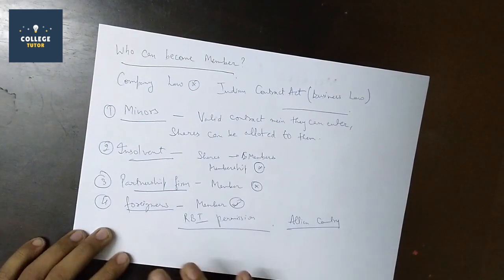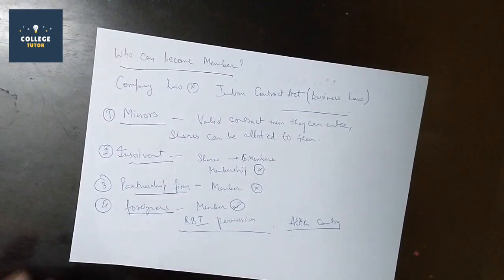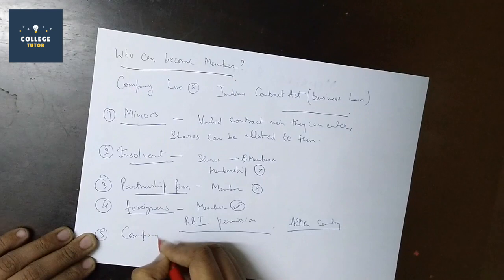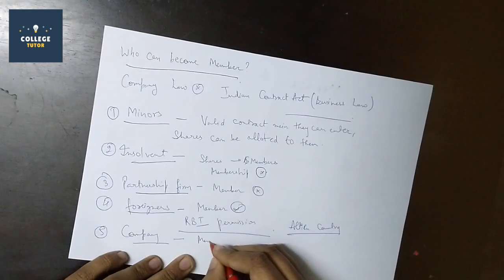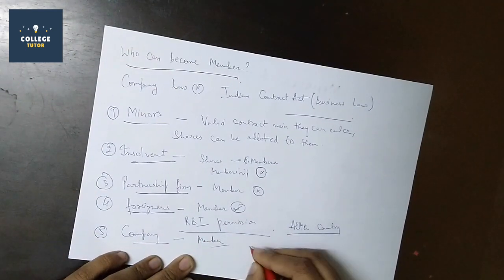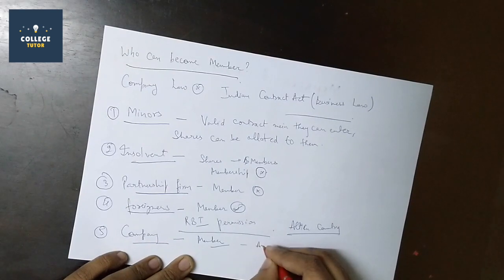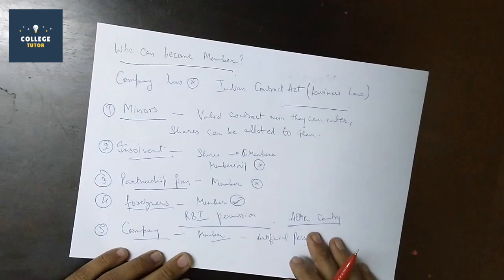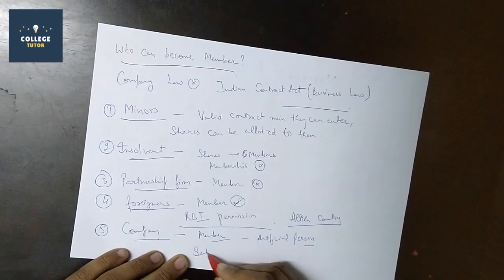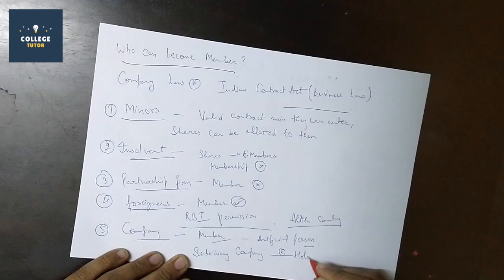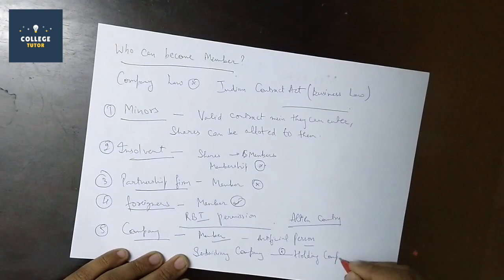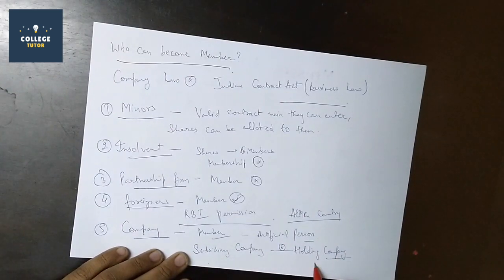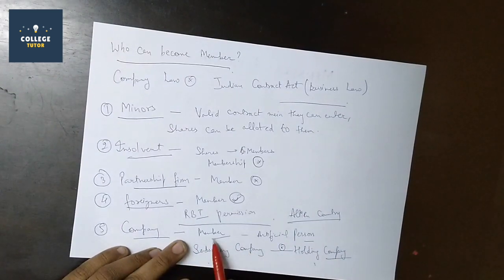The last thing is company. A company can be a member because company has a separate identity. This is an artificial person. One thing here is that any subsidiary company cannot hold shares in its holding company, which would violate certain rights.